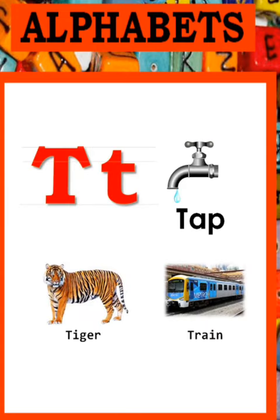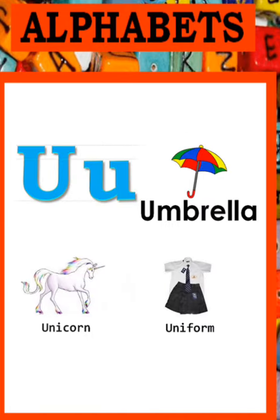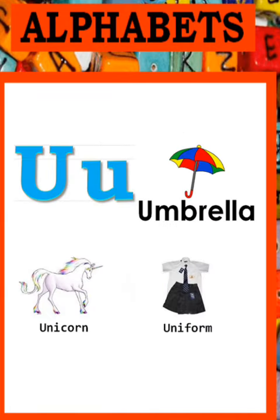T - T - Tap, Tiger and Train. U - U - Umbrella, Unicorn and Uniform.